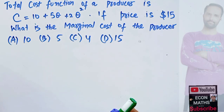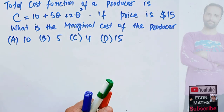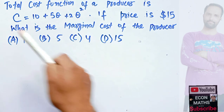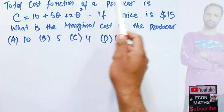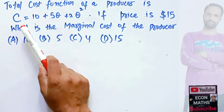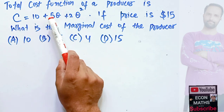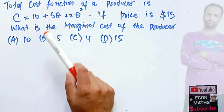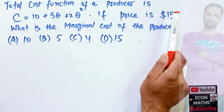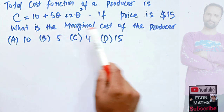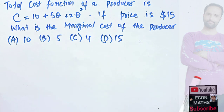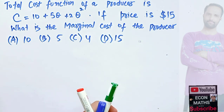In this video we will solve a problem on how to find the marginal cost from a given cost function and price. The total cost of a producer is given as C = 10 + 5Q + 2Q², where Q denotes the output. If price is $15, what is the marginal cost of the producer? The options are 10, 5, 4, and 15.